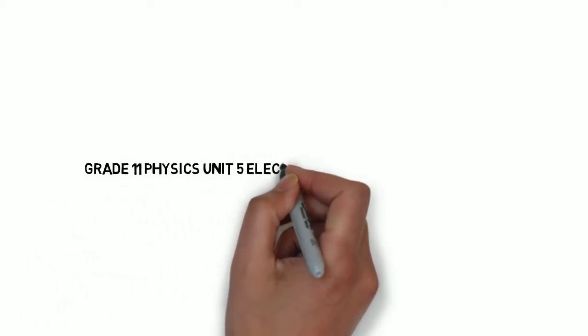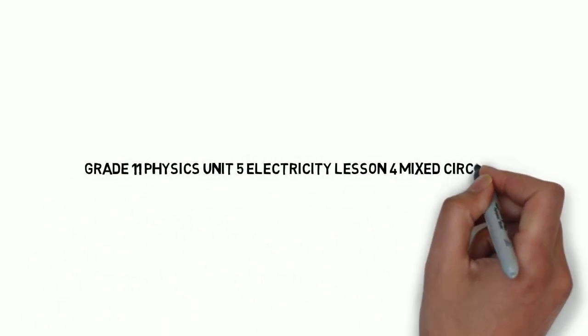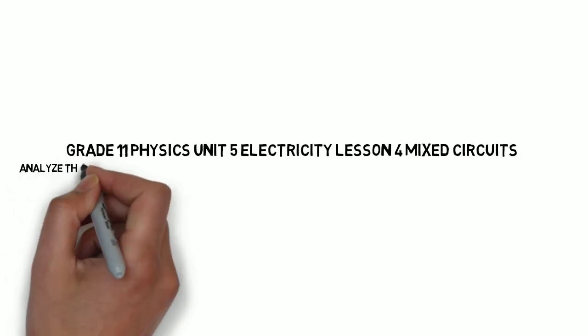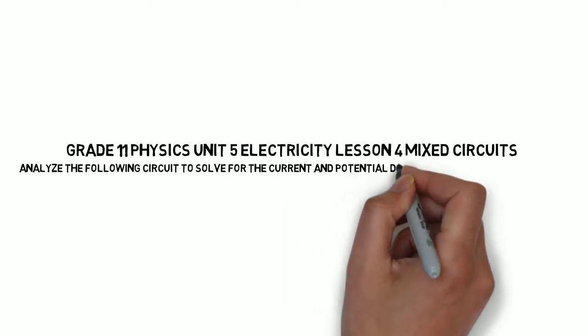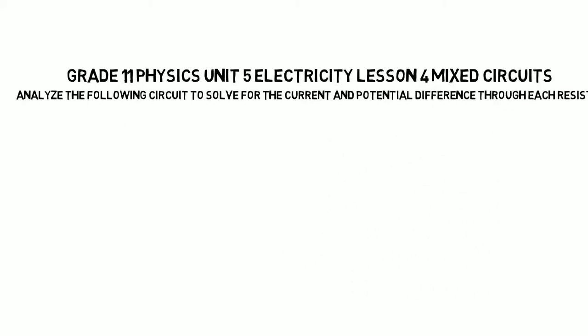This is Grade 11 Physics, Unit 5, Electricity, Lesson 4, Mixed Circuits. In this question, it asks to analyze the following circuit to solve for the current and potential difference through each resistor.